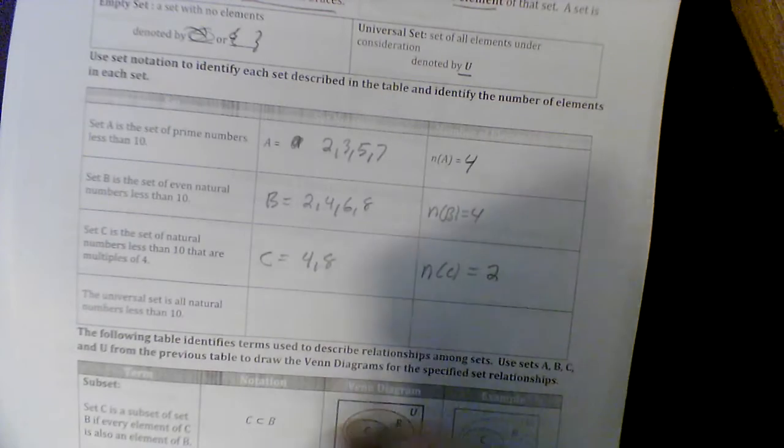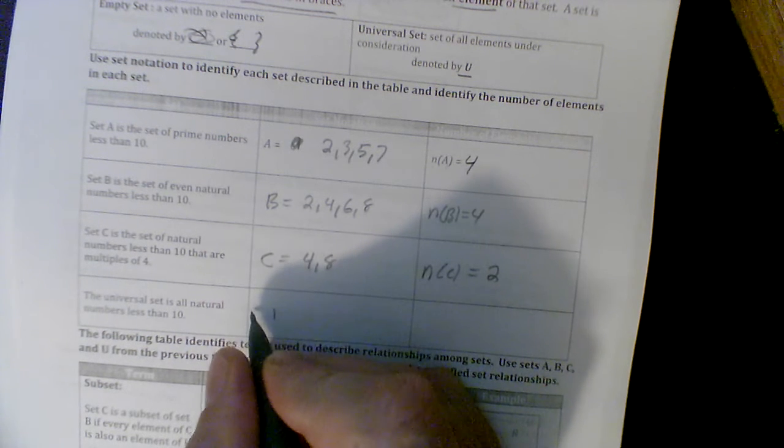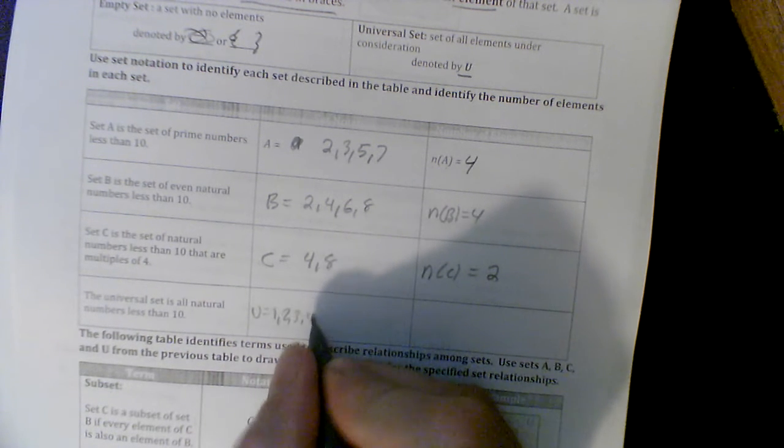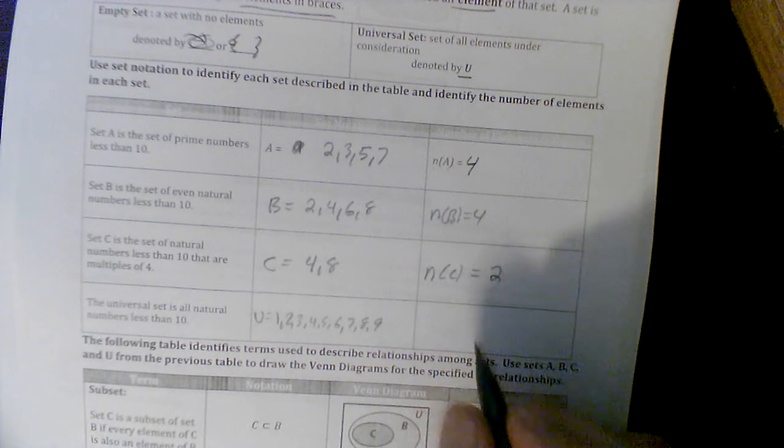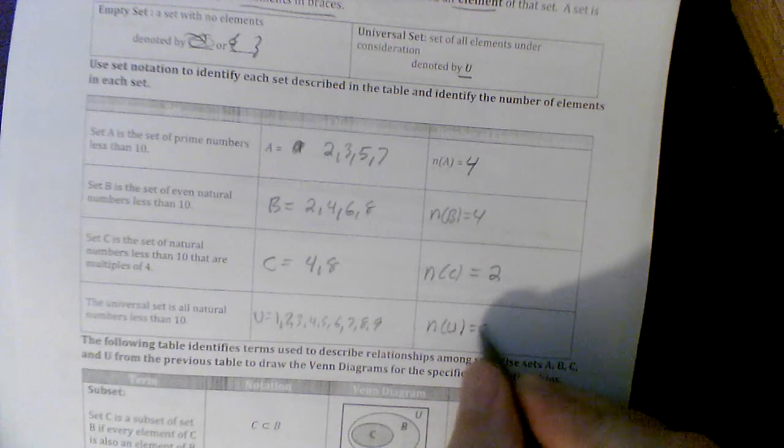And the universal set is all natural numbers less than 10. So we got 1. We'll say universal equals 1, 2, 3, 4, 5, 6, 7, 8, 9. And that would be the number in the universal set is going to be 9.